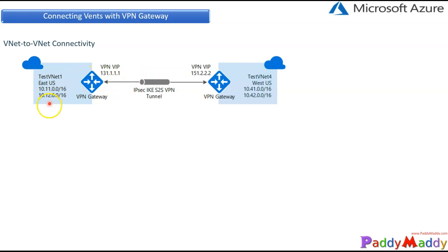We know that we can use VNet peering to create a connection between two different isolated virtual networks, maybe in a cross-subscription or cross-region scenario. But we can also connect two different networks not just with VNet peering — we can also introduce something called a VPN Gateway.